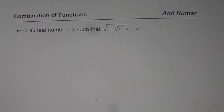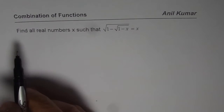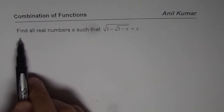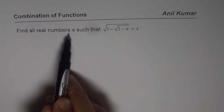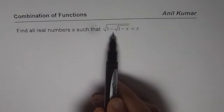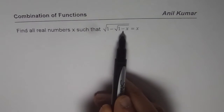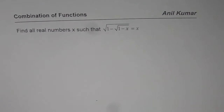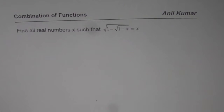Here is an example in which we will deal with two different kinds of functions. The question is: find all real numbers x such that the square root of 1 minus the square root of 1 minus x equals x. So we have a radical function on one side and a linear function on the other side.